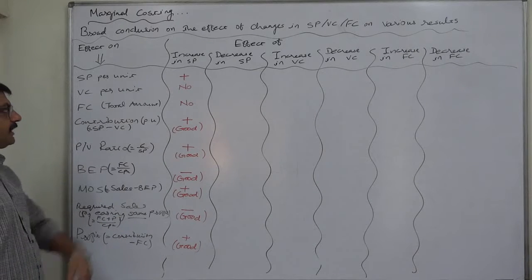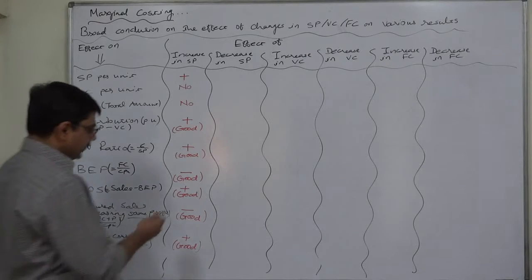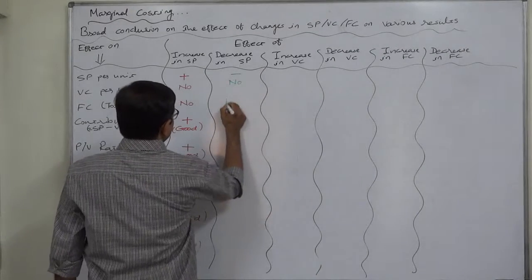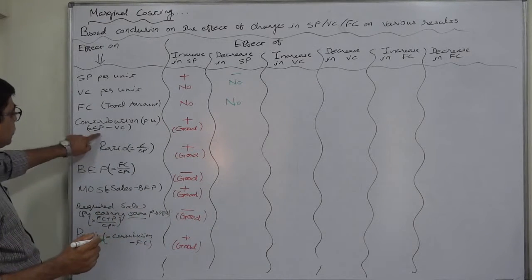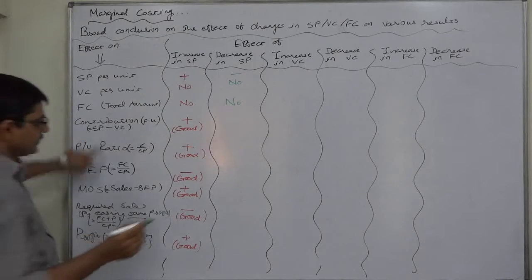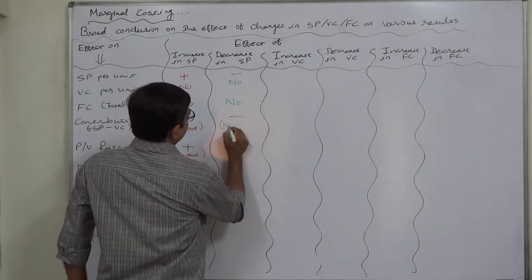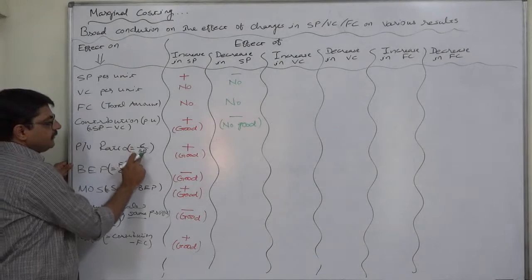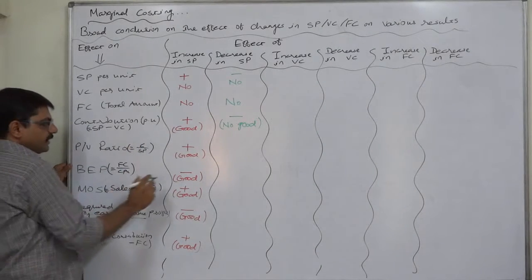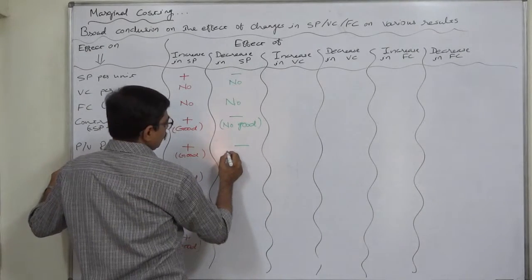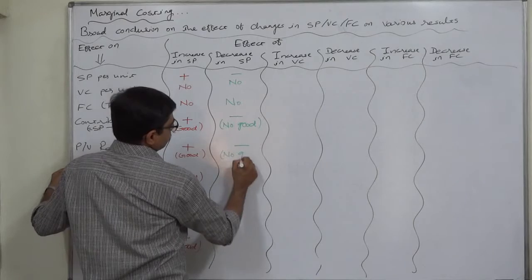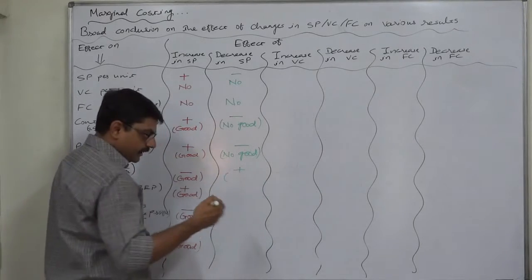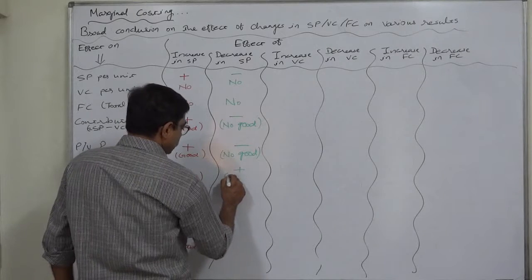Now the situation has changed — we decide to decrease the selling price. Selling price is going to decrease. No effect on variable cost directly, no effect on fixed cost directly. But contribution will decrease because variable cost remains unchanged and selling price decreases — not good for the financial health. PV ratio: contribution decreases and selling price decreases, so the PV ratio will decrease in most cases — also not good. BEP will increase, meaning the profit-making situation moves further from the starting point — not good.